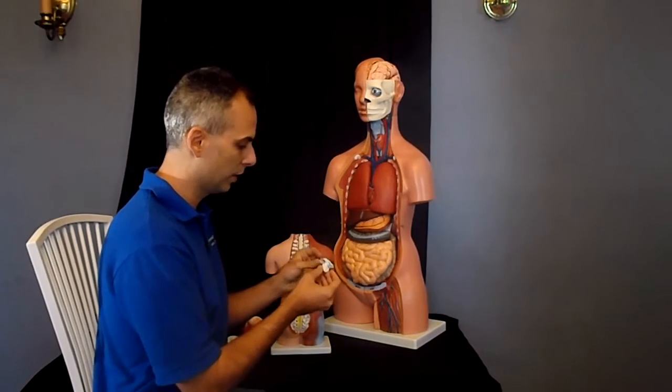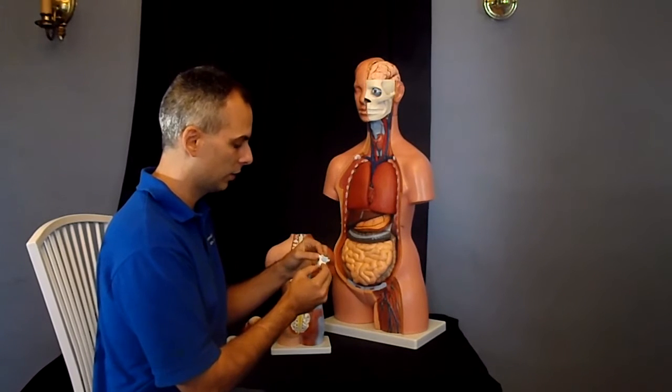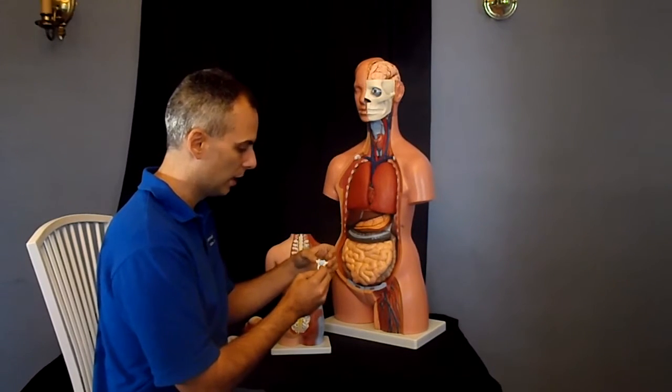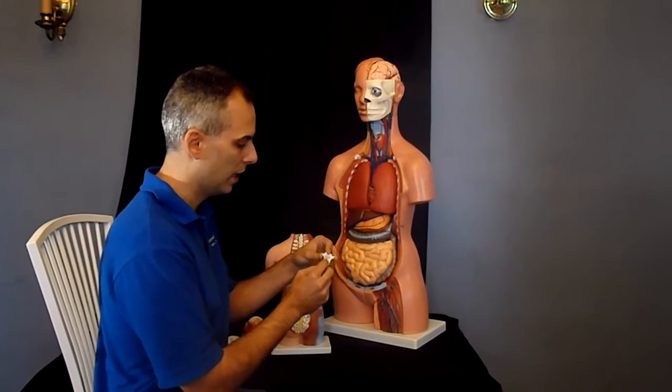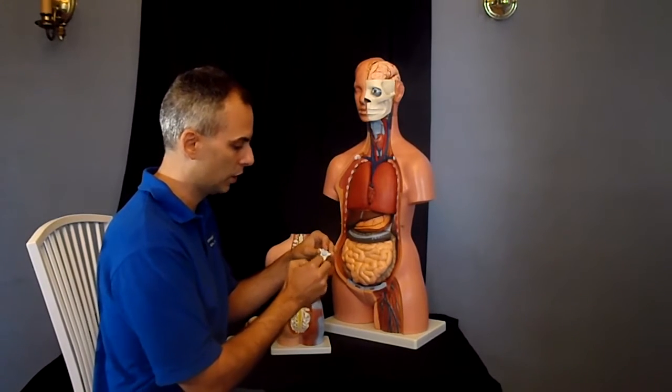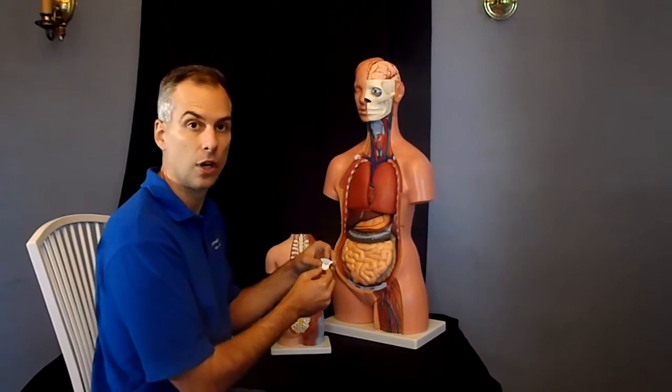Kids can get a chance to see what a vertebra looks like in terms of the neural spine, the wings, the transverse processes coming off of them, and the central part, kind of circular, that's called the centrum.